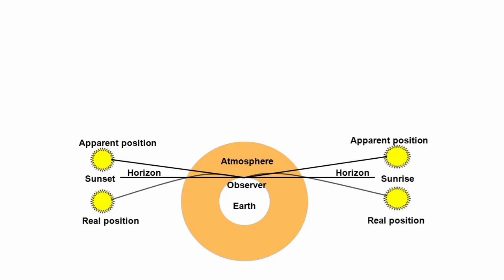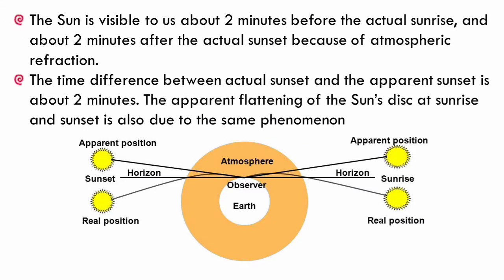So, the apparent duration of day time from sunrise to sunset is about four minutes more than the true duration. The oval shape of the sun when it is situated near horizon is also because of atmospheric refraction. This is the situation at the time of sunrise and the sunset.